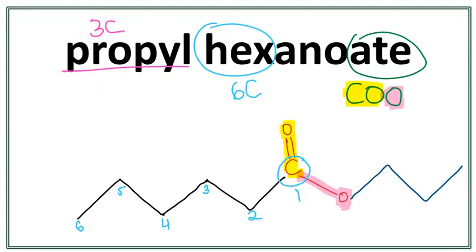Since we are drawing a line structure, we don't really need to draw this carbon right here. So let's get rid of this carbon and the numbers. So this is the structure for propyl hexanoate.